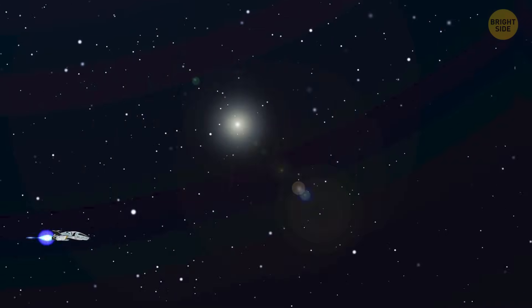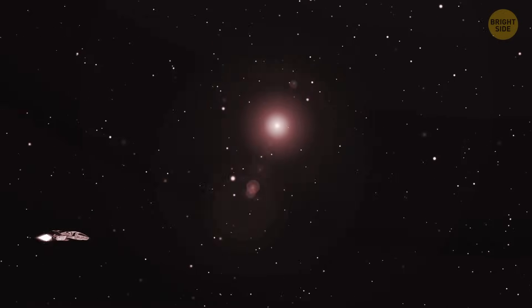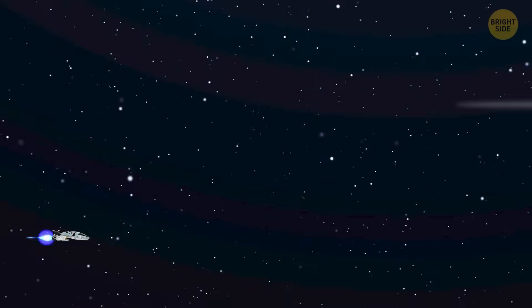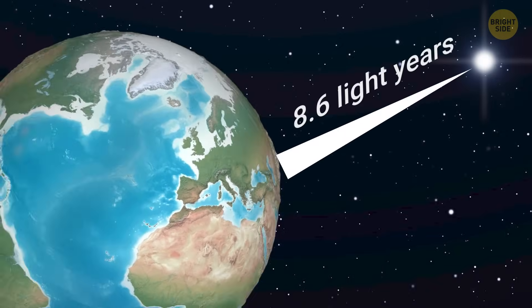You pass by beautiful stars, some of them are luminous, others have a reddish hue, and some seem to be dimming. That's Sirius, the brightest star in the night sky on Earth. It's about 8.6 light-years away from us.